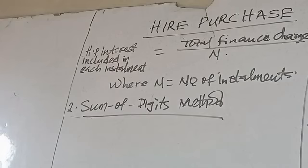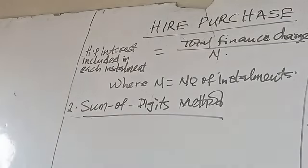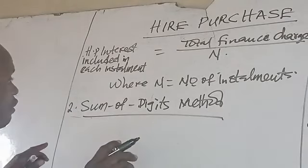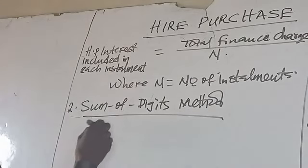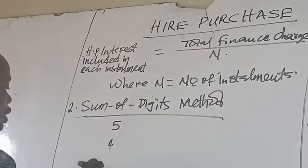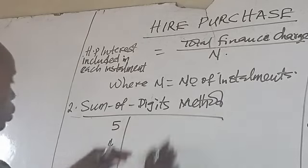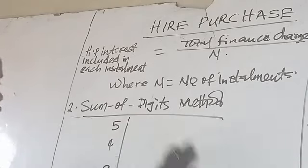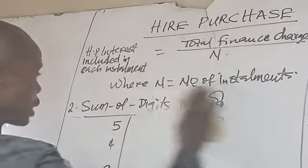For example, if the Hire Purchase Period is 5 years, you reverse the digits — starting with Year 5, Year 4, Year 3, Year 2, and Year 1 — and use these reversed digits to apportion the Hire Purchase Interest. A worked example will make this clearer.